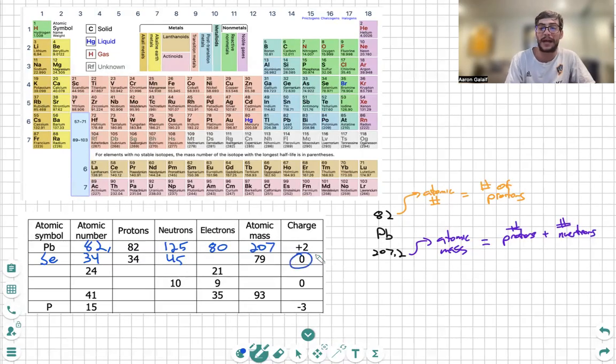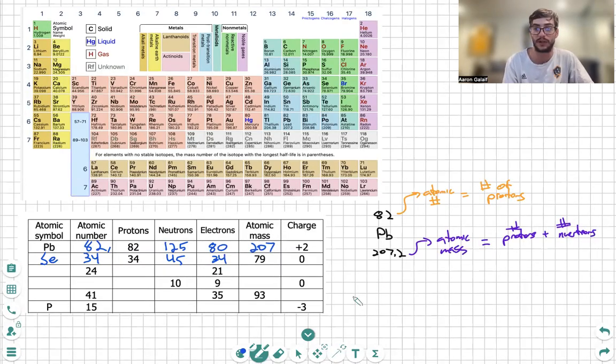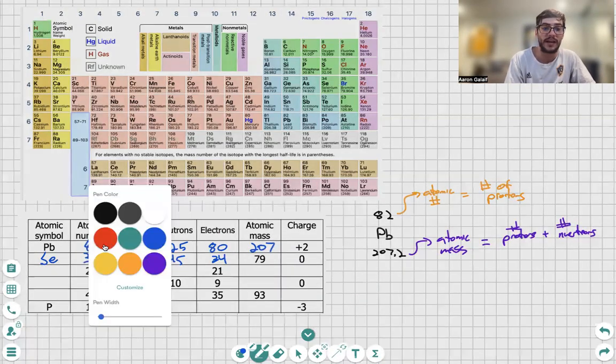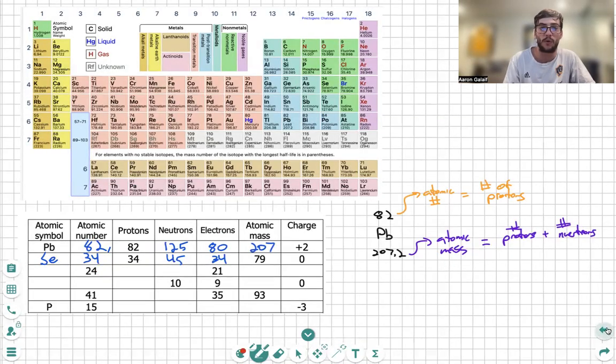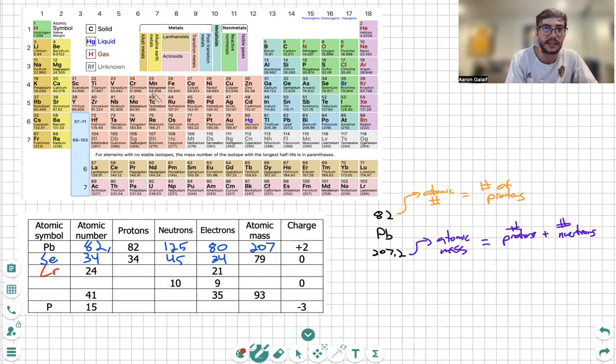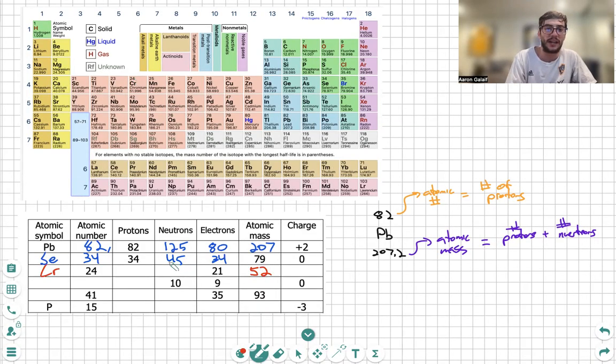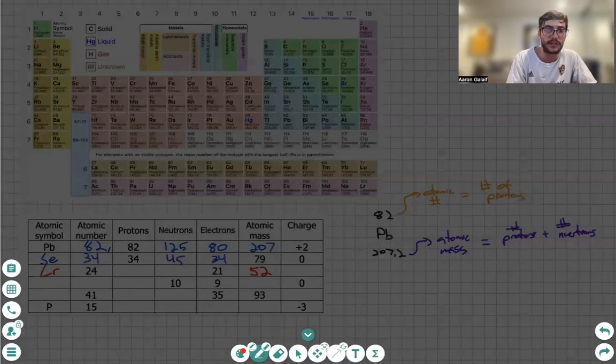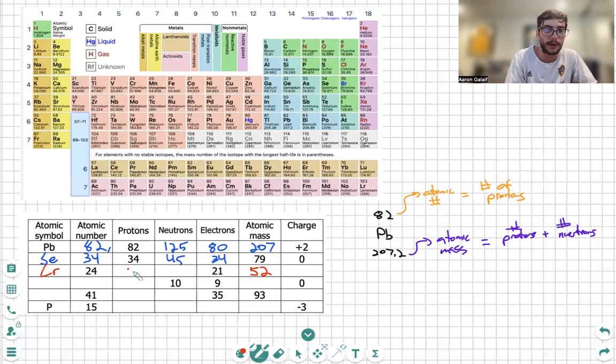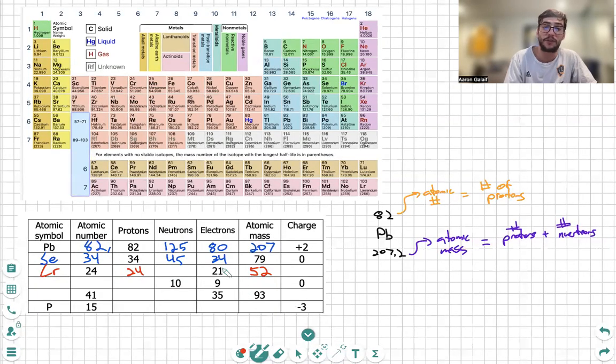Next we look for the element with an atomic number of 24. 24 is right here for chromium. We see that the atomic mass is 51.996, we're going to round it to 52. The atomic number is 24, so my protons are 24. I have 21 electrons, that means I have three more protons than electrons, thus I have a plus three charge. And then neutrons - we know protons plus neutrons equals the mass, so mass minus protons will equal neutrons.